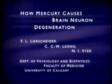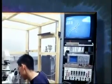How Mercury Causes Brain Neuron Degeneration. Mercury has long been known to be a potent neurotoxic substance, whether it is inhaled or consumed in the diet as a food contaminant.